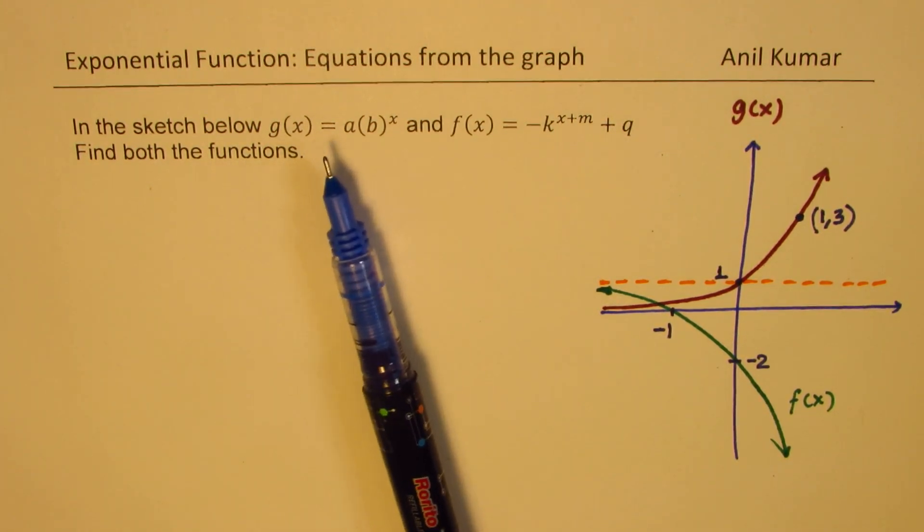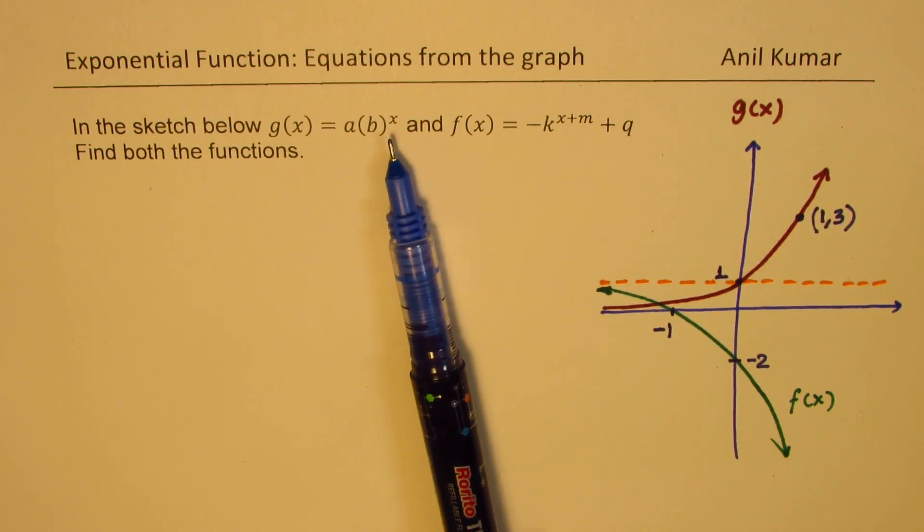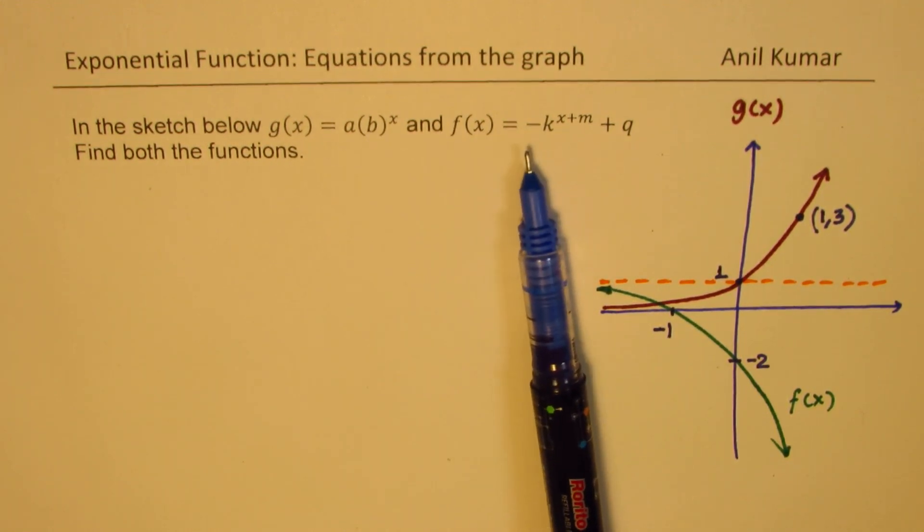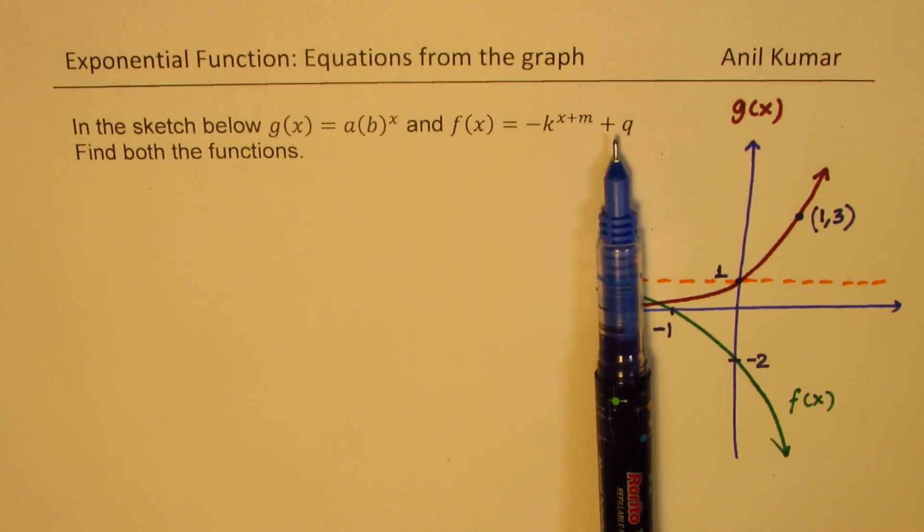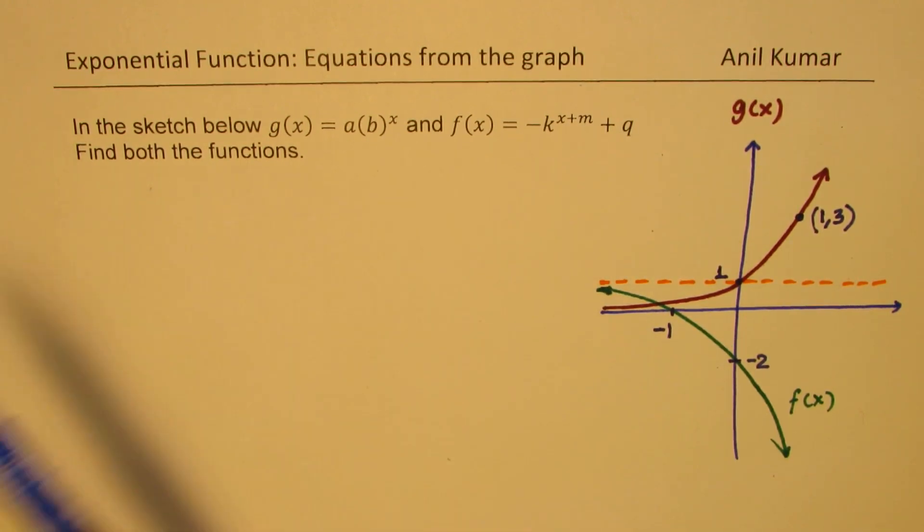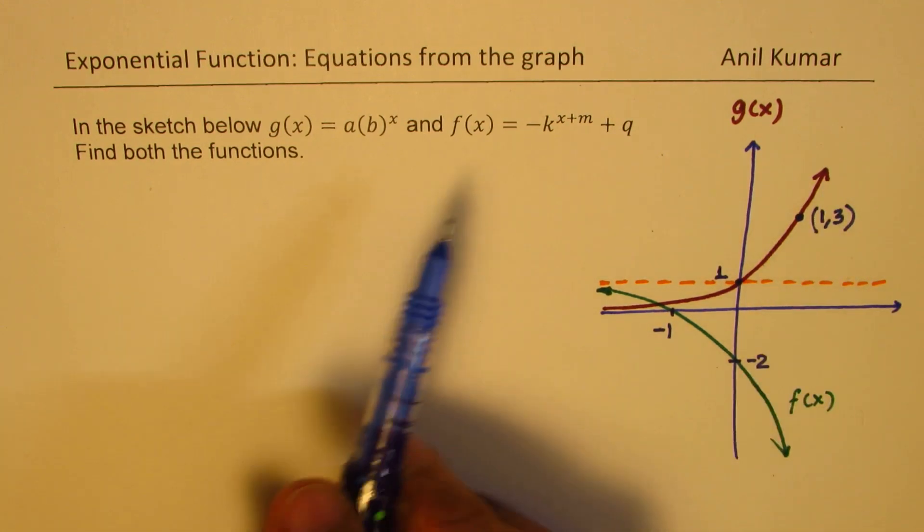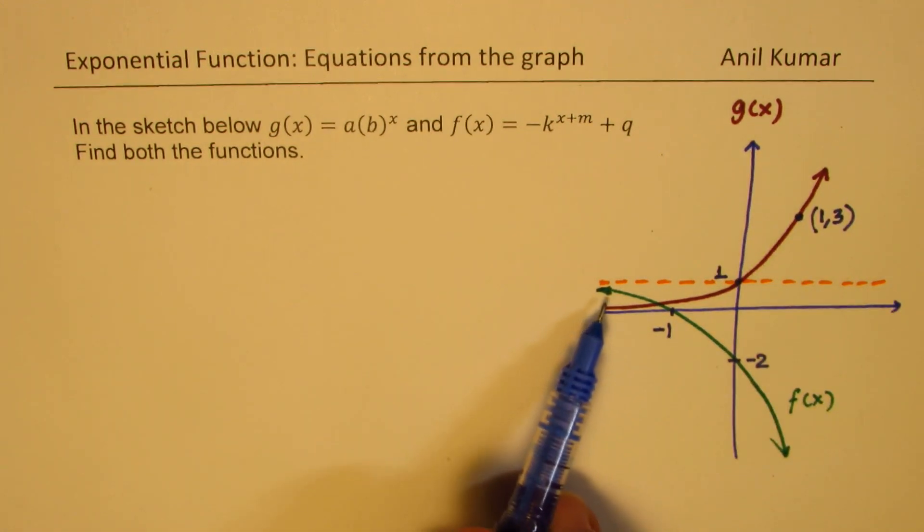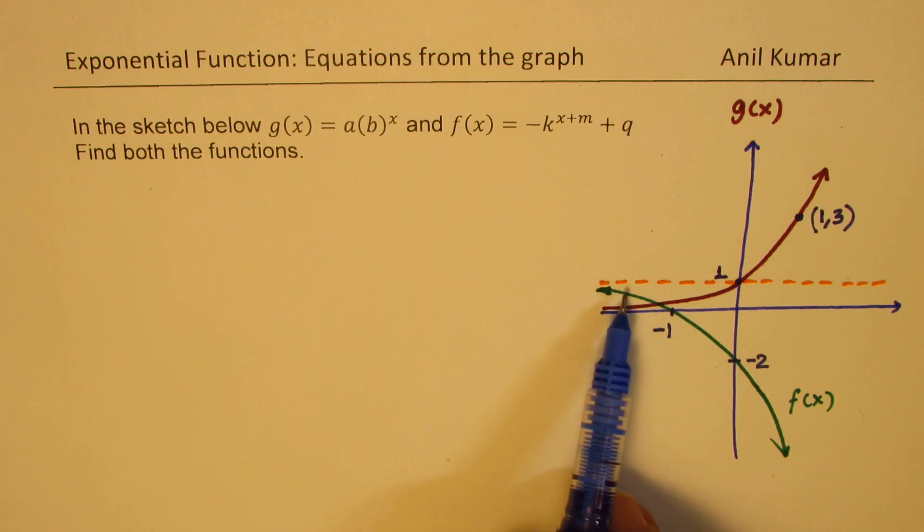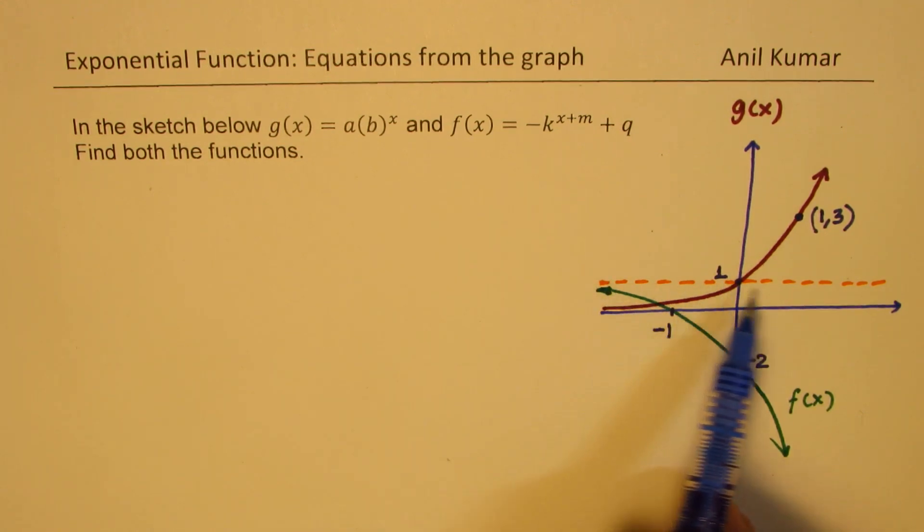In the sketch below, g(x) = a(b)^x and f(x) = -k^(x+m) + q. Find both the functions. So that is the graph for these functions. Now g(x) is an exponential function which is growing and f(x) has been reflected so that it has y = 0 as its horizontal asymptote. x-intercept is -1, y-intercept is -2. You can also pause the video, answer this question, and then look into my suggestions.